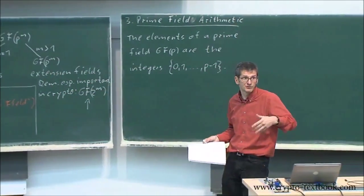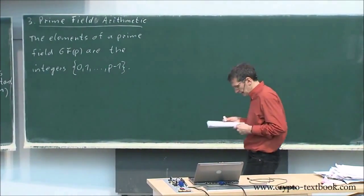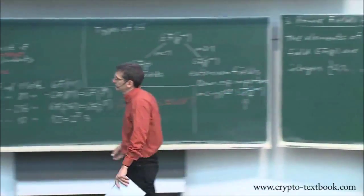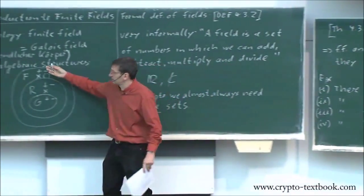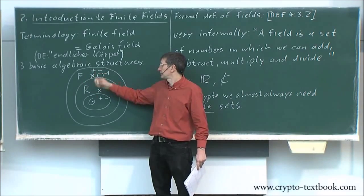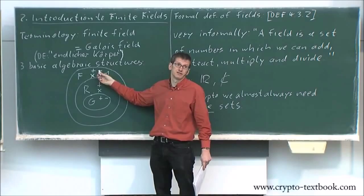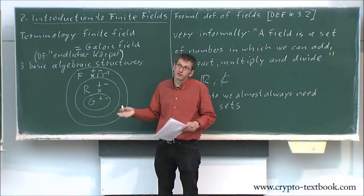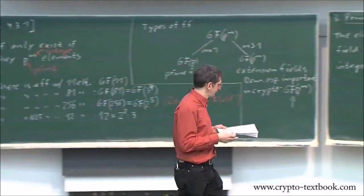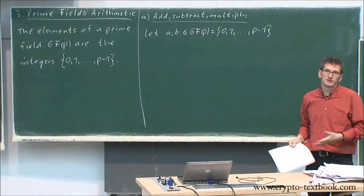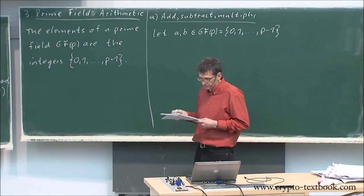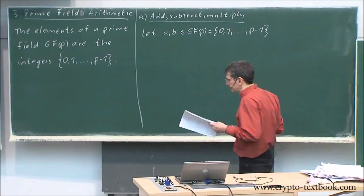For prime fields, computations are easy — essentially integer arithmetic we are used to from elementary school. A finite field has four types of operations: addition, subtraction, multiplication, and inversion. We want to talk about all four and how we do this type of arithmetic. We start with two elements a and b, any elements of the finite field.